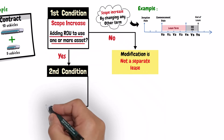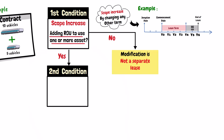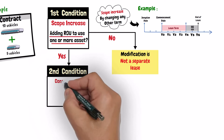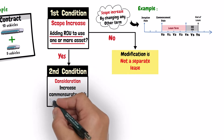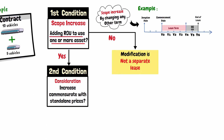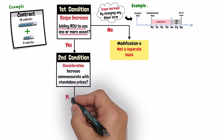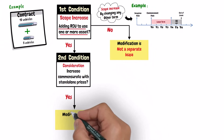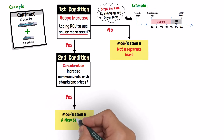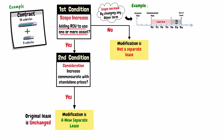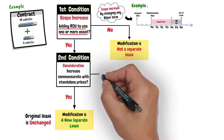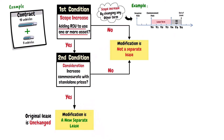The second condition that should be met to account for the modification as a separate lease is that the consideration for the lease increases by an amount commensurate with the standalone price for that increase in scope, adjusted to reflect the circumstances of the contract. If both conditions are satisfied, then the lessee should account for the modification as a new separate lease transaction, and the accounting for the original lease is not changed.